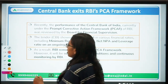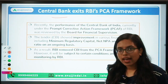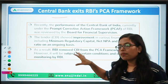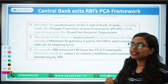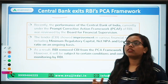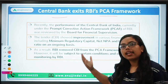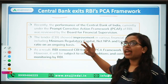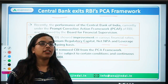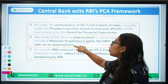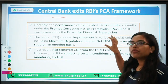Central Bank of India is one of the nationalized, public sector banks and was the last bank under the PCA framework. PCA stands for Prompt Corrective Action Framework of RBI. RBI felt, after analysis, that Central Bank of India has been doing well and improving its performance on indicators such as minimum regulatory capital, net NPA, and leverage ratio on a sustainable, ongoing basis — and that's why RBI decided to remove its name from the PCA framework.